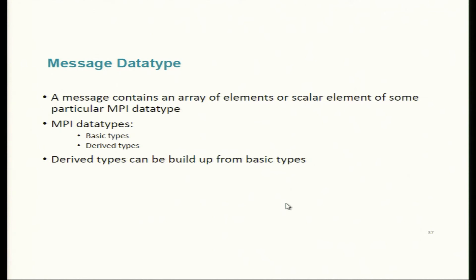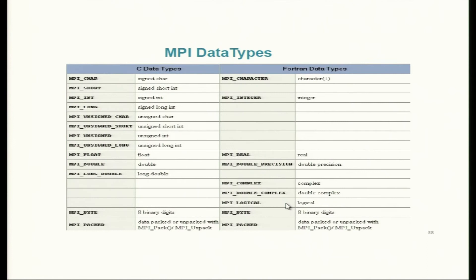MPI provides its own data type names for both primitive and user-defined types. Users can define their own data types — for example a structure with integer and float variables, so that instead of two separate sends for two different data types, you create a derived type and send them in one group. The basic data types in C include MPI_CHAR, MPI_SHORT, MPI_INT, and so on — all in capitals for C. In Fortran, case can be anything.